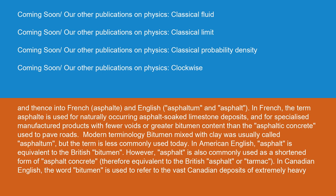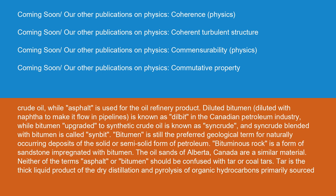Modern terminology: bitumen mixed with clay was usually called asphaltum, but the term is less commonly used today. In American English, asphalt is equivalent to the British bitumen. However, asphalt is also commonly used as a shortened form of asphalt concrete, therefore equivalent to the British asphalt or tarmac. In Canadian English, the word bitumen is used to refer to the vast Canadian deposits of extremely heavy crude oil, while asphalt is used for the oil refinery product. Diluted bitumen — diluted with naphtha to make it flow in pipelines — is known as dilbit in the Canadian petroleum industry, while bitumen upgraded to synthetic crude oil is known as syncrude, and syncrude blended with bitumen is called synbit.